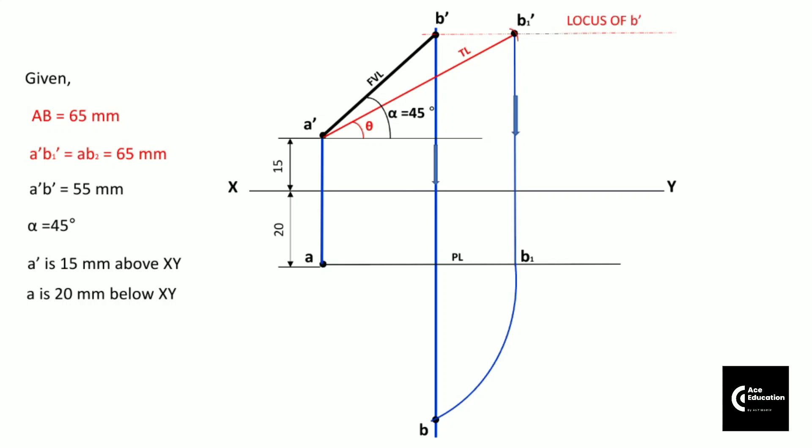Now you can join this A and B by straight lines. This is the top view line here. Now this top view line makes an angle beta with XY line.